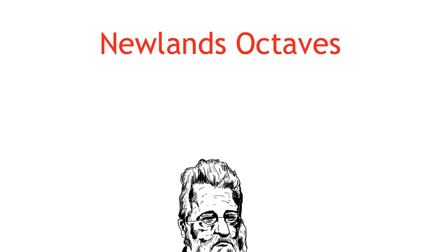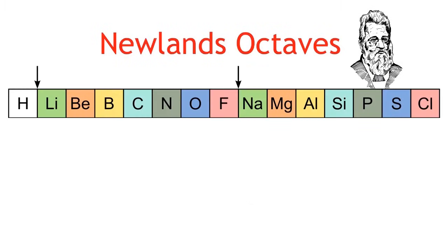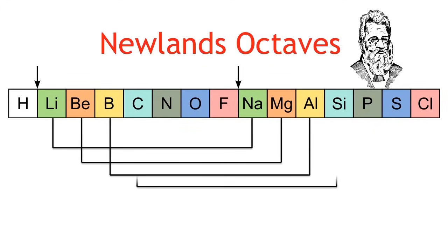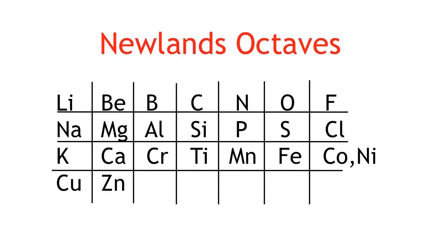Fifty years later came Newland's octaves. Newland noticed that when the elements are arranged in order of their atomic weight, every eighth element had similar properties. So he listed some of the known elements in rows of seven. His pattern only worked up to a certain point. It broke down on the third row.